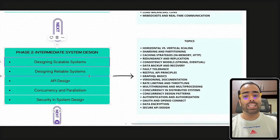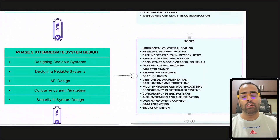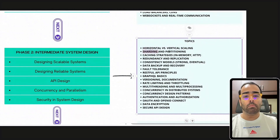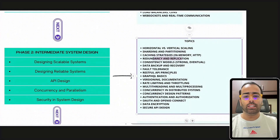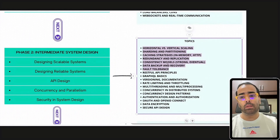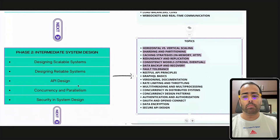In intermediate system design, you need to know about scalability and reliability. For scalability, you should know how to scale your application — horizontally or vertically — and techniques like sharding and partitioning, as well as caching strategies. For reliability, you should be aware of redundancy, replication, fault tolerance, data backup, and consistency models.